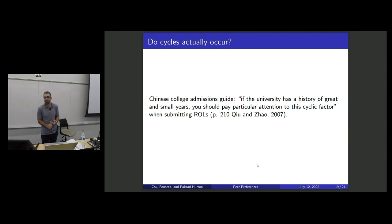And so there's some question about, is this realistic? And here's this Chinese College Admissions Guide, which says, look, you should really be paying attention to this. If the university has a history of great and small years, you should pay attention to this cyclicality. Students are seemingly not aware of this, even though it does seem to be happening.